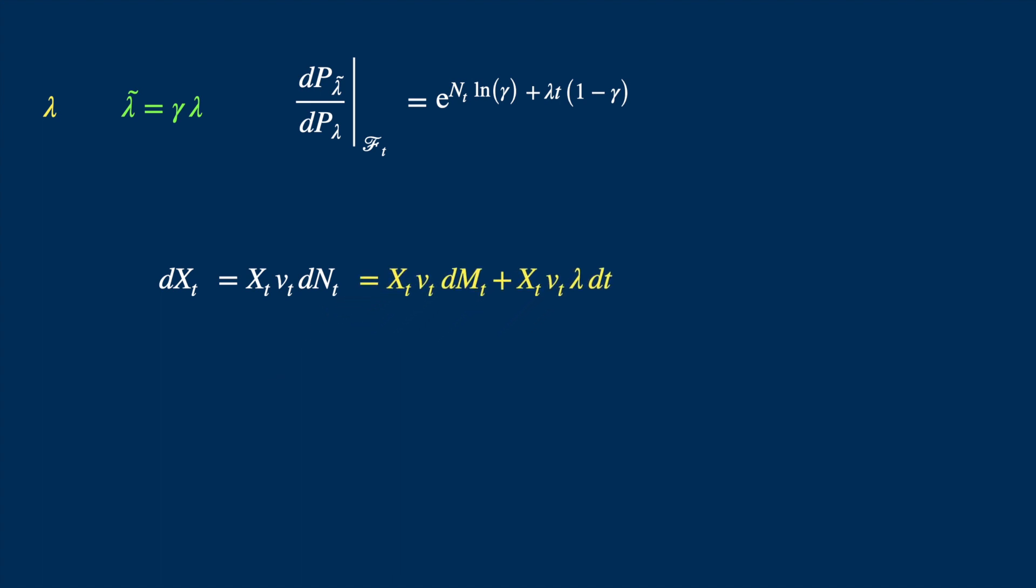Now if we were to change the probability measure in line with the Radon-Nikodym derivative we have here, then we have to substitute dM tilde lambda, which is like the local martingale version of the Poisson process with parameter tilde lambda, plus the gamma times lambda times dt. Because remember tilde lambda is equal to gamma times lambda, so the drift will be different now. And we can make the substitution. And this is how the SDE will look like under the tilde measure.